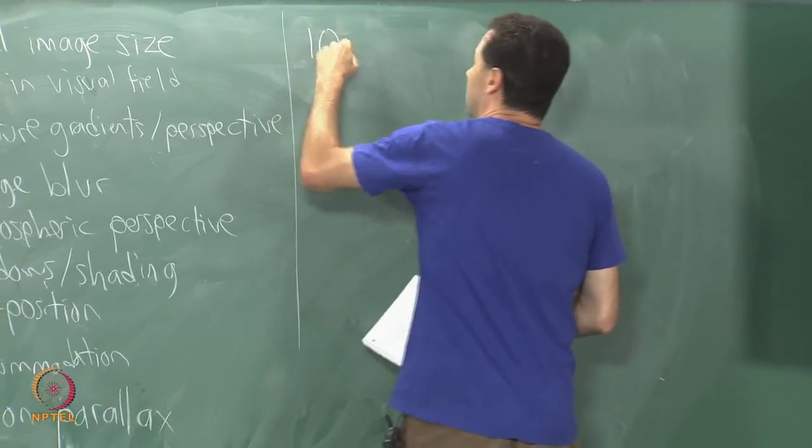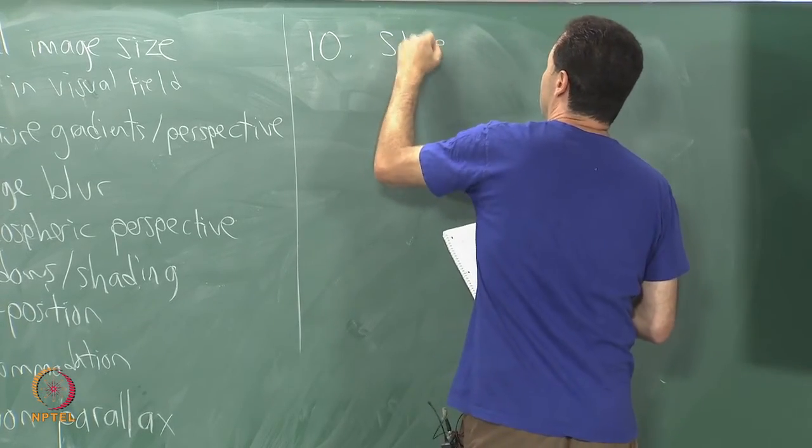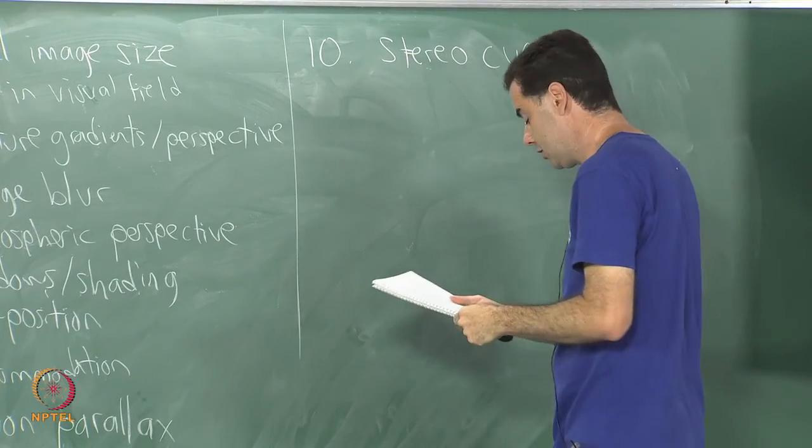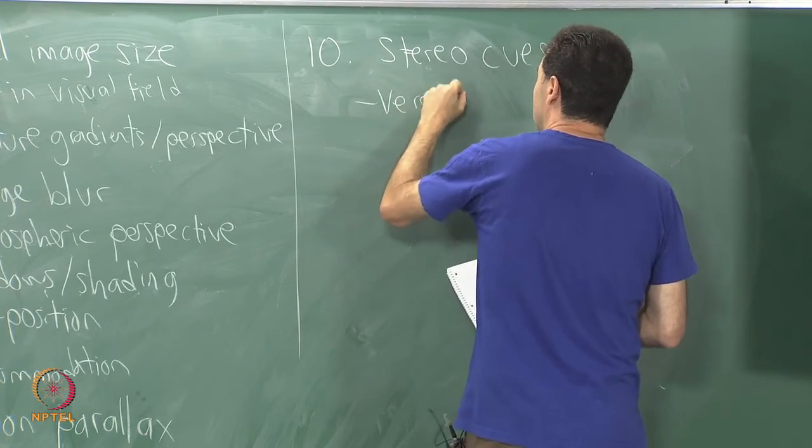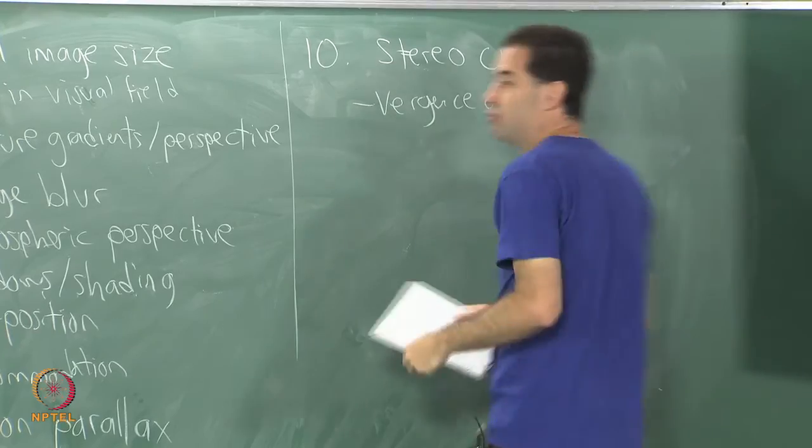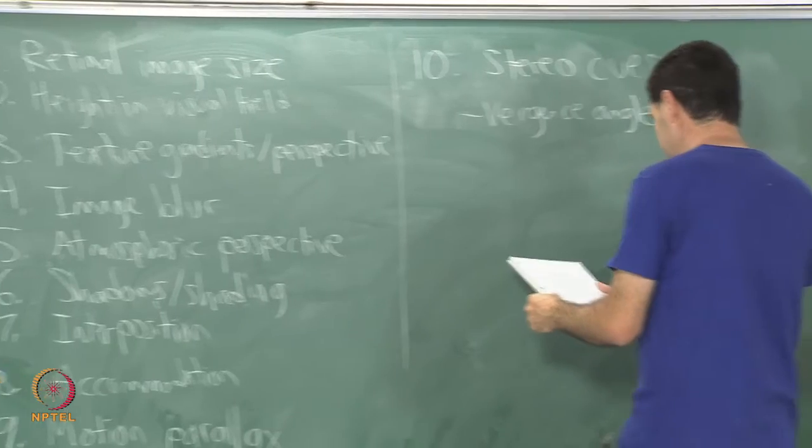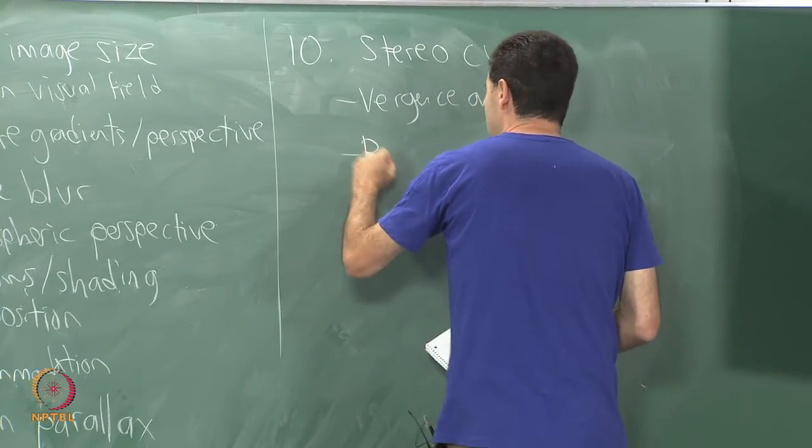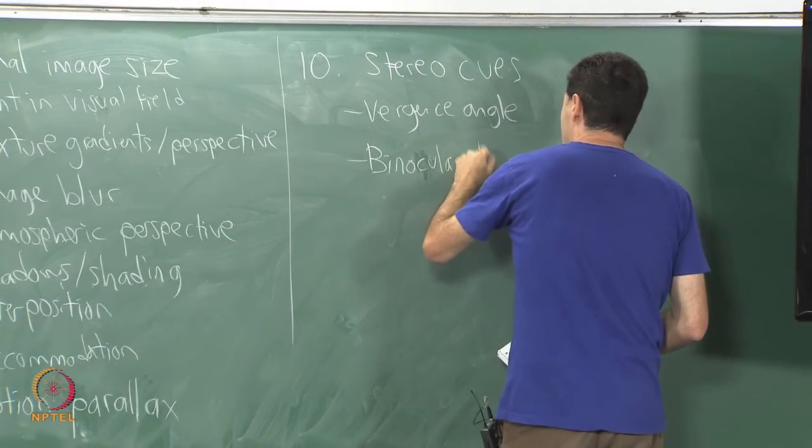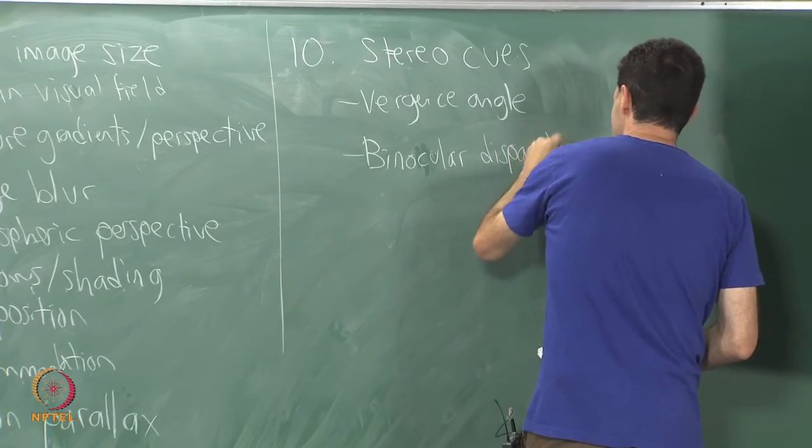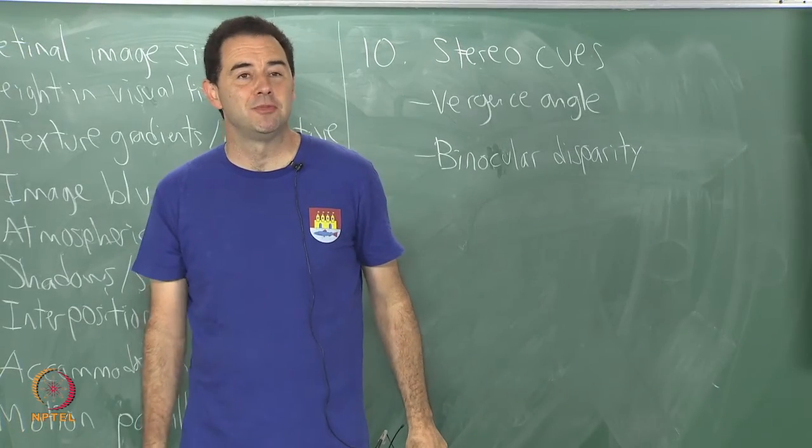And finally, number 10, I saved this for the end, the obvious one which is stereo. Stereo cues. What are these? There's the vergence angle - your brain knows how your eyes are oriented, how much they have converged, you have a signal for that. You have what is called binocular disparity - how much, how different are the images between the two eyes.